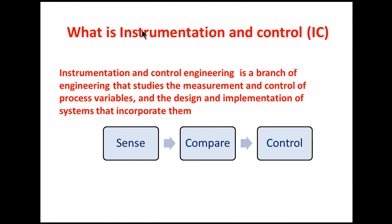First question: what is instrumentation and control? Instrumentation and control engineering is a branch of engineering that studies the measurement and control of process variables and the design and implementation of systems that incorporate them. Ultimately, IC branch deals with measurement and control. There are three steps for control: sense, compare, and control. We first sense the quantity, then compare it with the desired quantity or set point, and finally take corrective action.